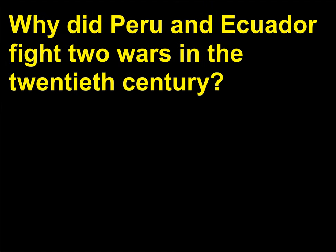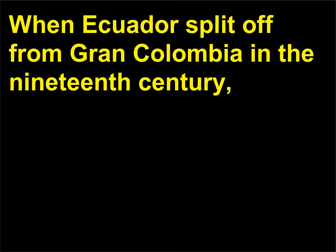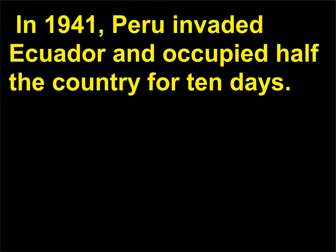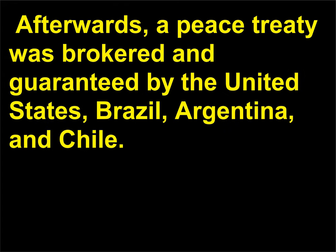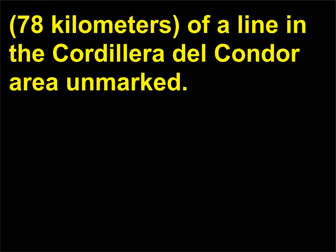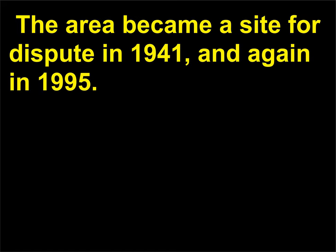Why did Peru and Ecuador fight two wars in the 20th century? When Ecuador split off from Gran Colombia in the 19th century, it signed a border agreement with Peru defining its boundaries along the Marañon River. In 1941, Peru invaded Ecuador and occupied half the country for 10 days. Afterwards, a peace treaty was brokered and guaranteed by the United States, Brazil, Argentina, and Chile. The United States mapped the border, leaving approximately 48 miles (78 kilometers) of a line in the Cordillera del Condor area unmarked. The area became a site for dispute in 1941 and again in 1995.